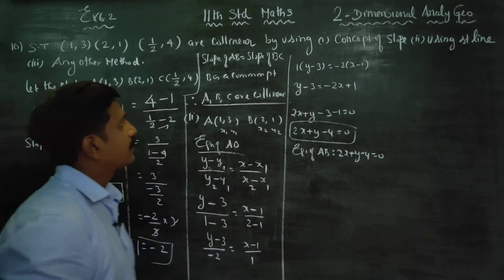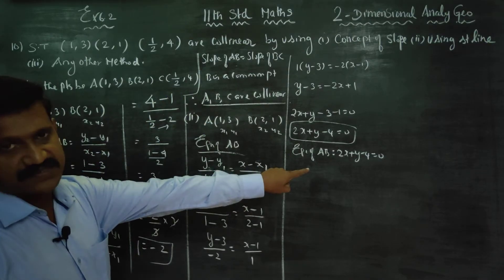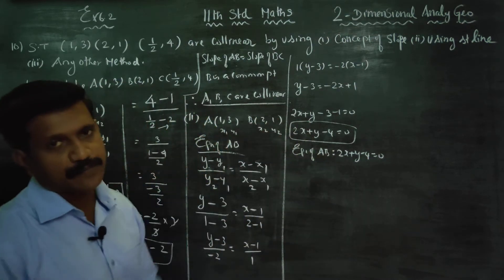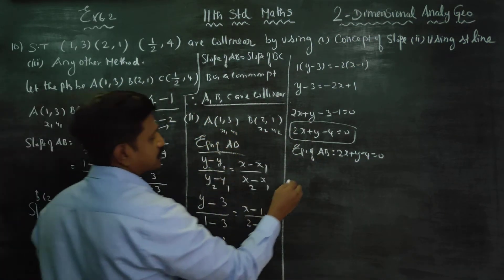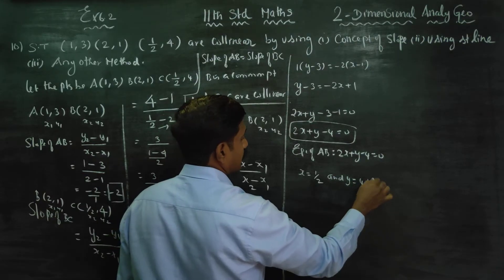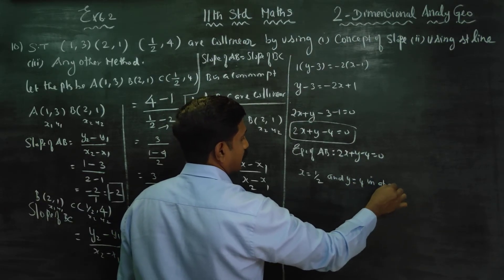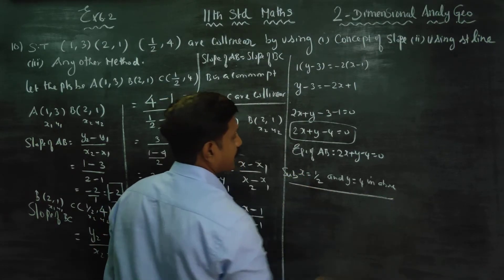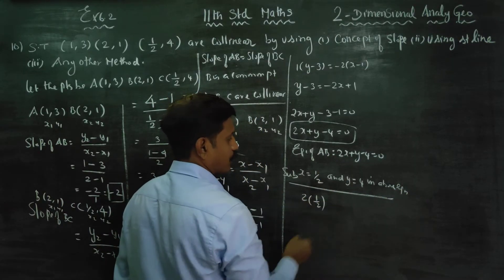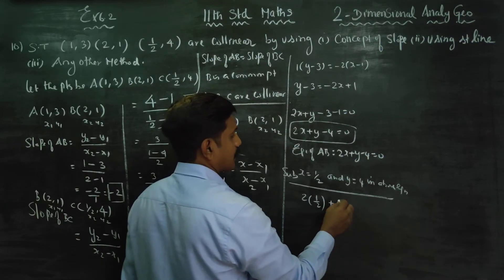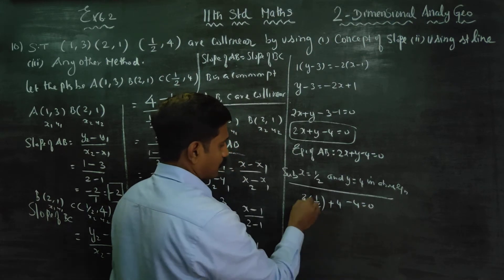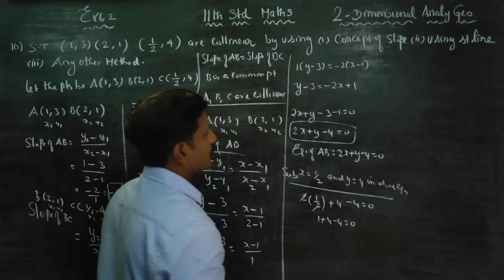After finding the equation of AB, I am going to substitute the C point. If it satisfies the equation, giving 0 equal to 0, then the given points are collinear. I am going to put x equal to 1/2 and y equal to 4 in the equation of AB. So: 2 into 1/2 plus 4 minus 4 equals 0. The 2s cancel, giving 1 plus 4 minus 4 equals 0, which is 1 plus 0 equals... let us verify: 0 equals 0.